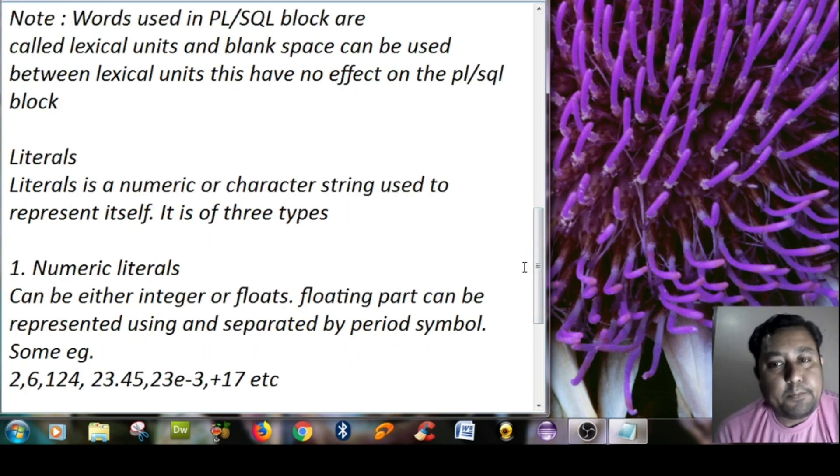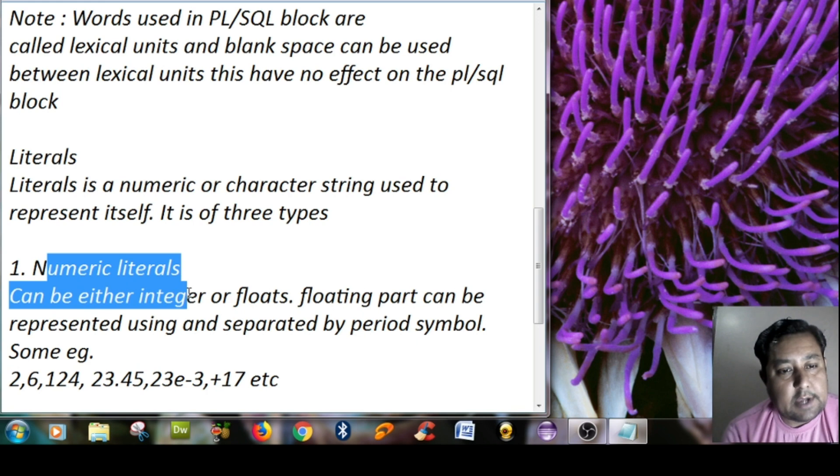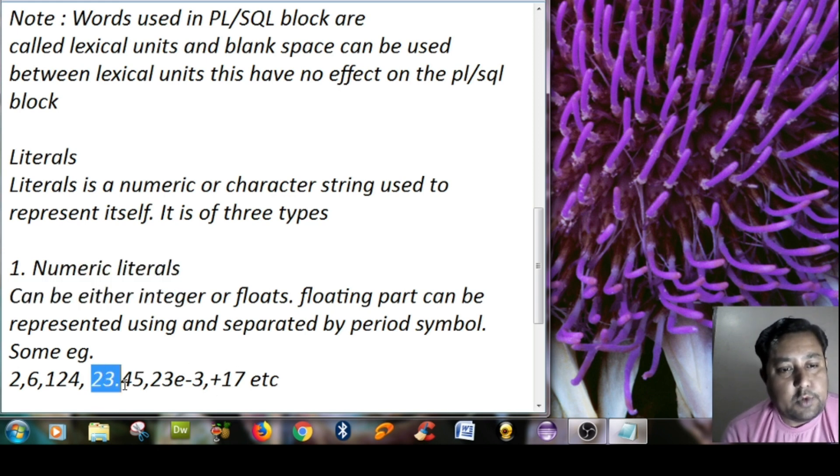First of all we work on numerical literals. It can be represented using integer numbers and floating point numbers. Integer numbers are represented like 2, 6, 1, 24 - these are integer literals. For floating point representation, they can be represented using the period symbol. So 23.45 is a floating point numerical literal. You can also represent numbers using their signs like positive 17, minus 17, etc. You can also represent numbers in exponential form like 23e-3.